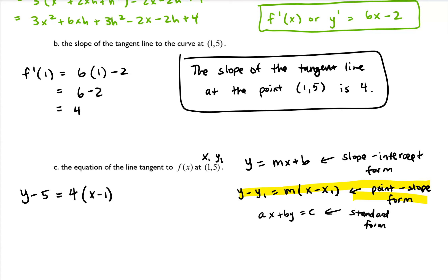And I can simplify that if I wanted to. You could also leave your answer like this in point slope form. But if I wanted to change it to slope intercept form, I could distribute the 4 in and then add 5 to both sides. So we get y equals 4x plus 1.